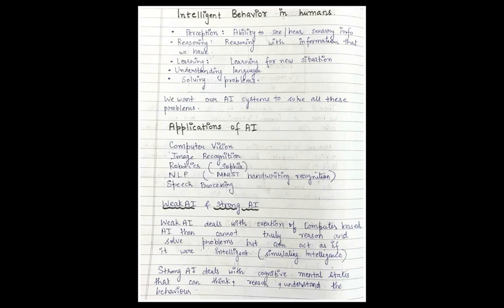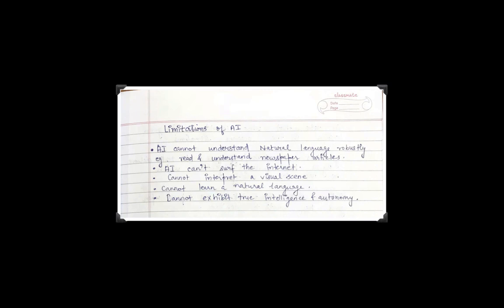Now we have some limitations of AI. AI cannot understand natural language robustly or completely. It cannot read and understand newspaper articles. AI cannot serve the internet properly. It cannot interpret a visual scene, for example it cannot create a new story out of that. It cannot learn a natural language completely. It cannot exhibit true intelligence and autonomy. The current situation is it is not completely autonomous, and we cannot guarantee it can be in upcoming years. It is still not exhibiting the true intelligence that is in human beings.